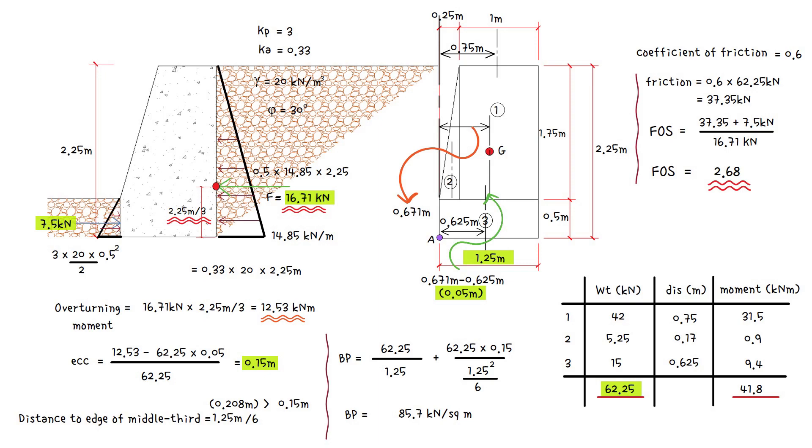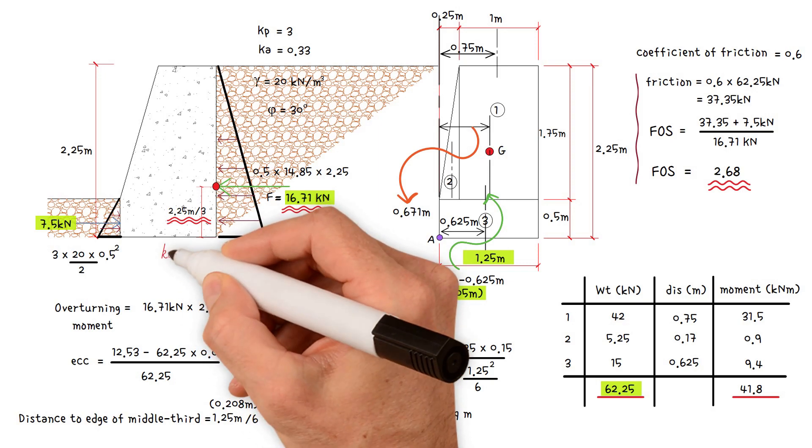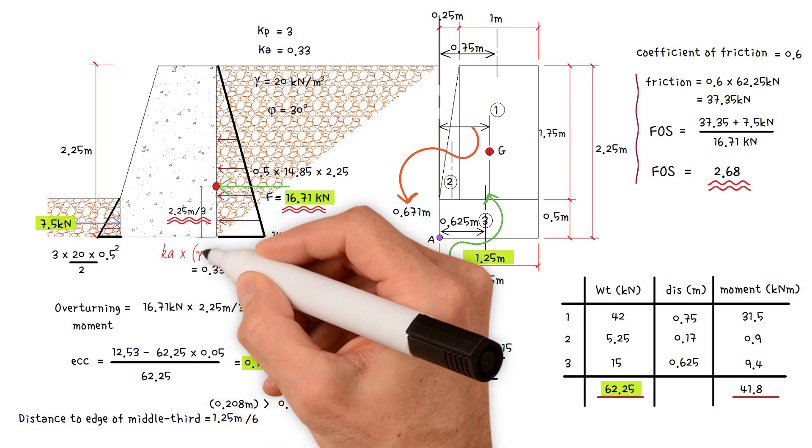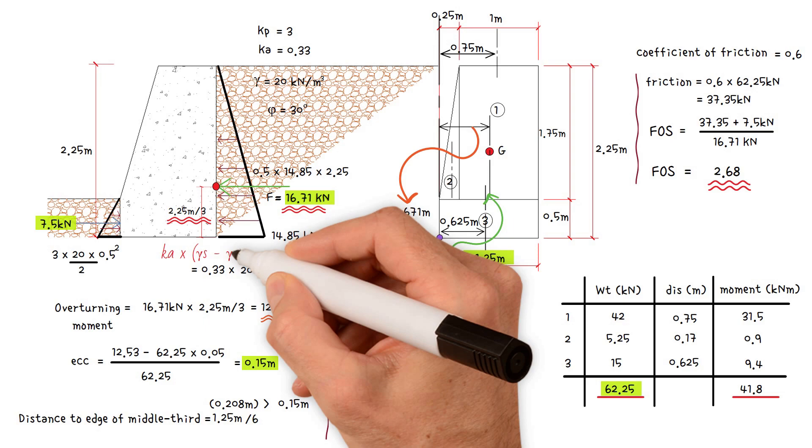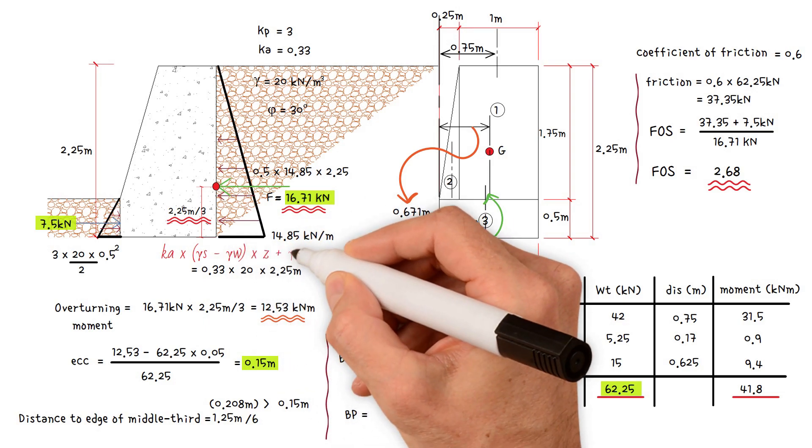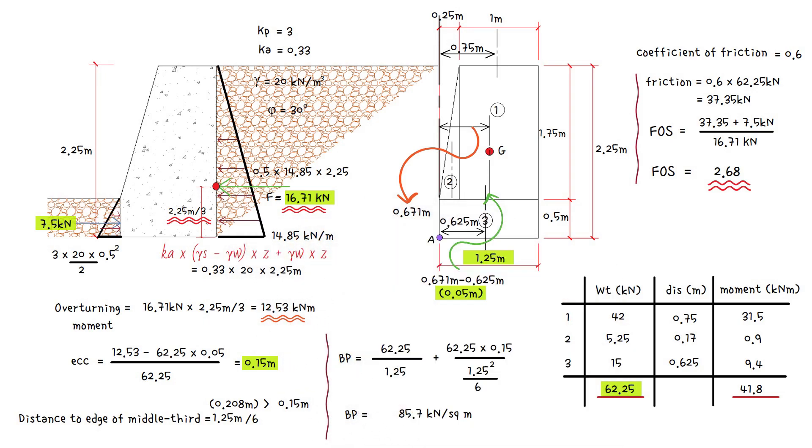The pressure becomes: pressure from soil and water equals active pressure coefficient times unit weight of soil minus unit weight of water times height of wall, plus unit weight of water times height of wall.